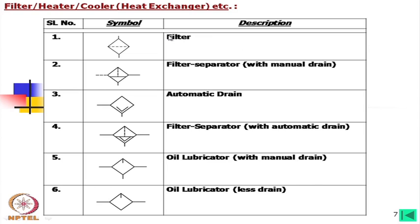For the filter and strainer, although not shown in the ISO glossary, a diamond-like block is used. The through line passes through it with a dotted line. A filter separator with manual drain is shown, as well as an automatic drain version. There is also an oil lubricator with manual drain and a version with no drain, plus an oil lubricator with automatic filling.